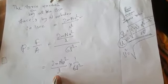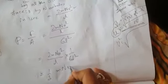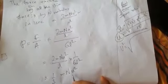If you see it properly, 2mnU square by L times 1 by 6L square. Now if you cut it, you will get 1 by 3. You will get m, you will get n, you will get U square.